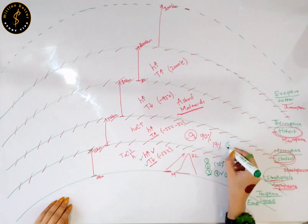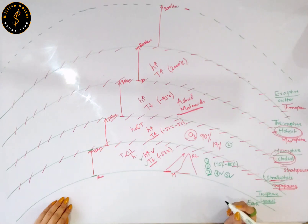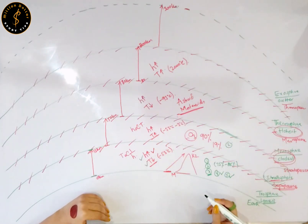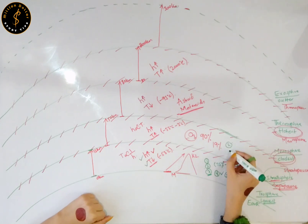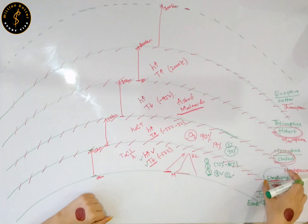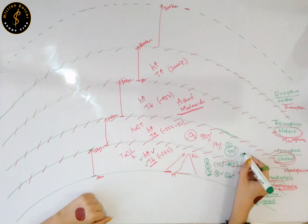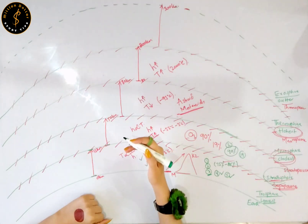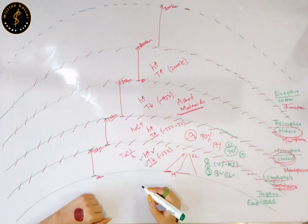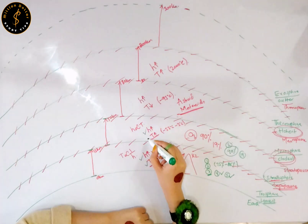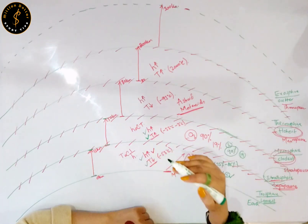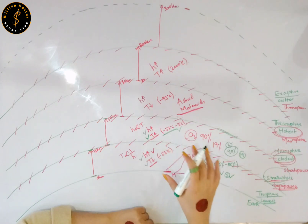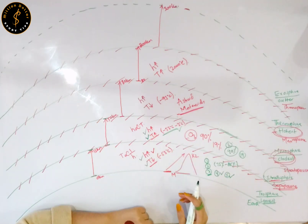Your stratosphere is the second layer of your planet Earth. The transition zone between stratosphere and mesosphere is known as your stratopause. 90% of the total ozone exists in the upper portion of your stratosphere, and 19% of the total gases exist in your stratosphere. The stratosphere starts from 12 kilometers above the surface of planet Earth and goes up to 50 kilometers. With the increase in height, the temperature in the stratosphere increases, ranging from minus 53 to minus 3 degrees centigrade.